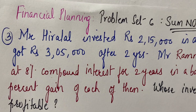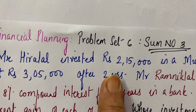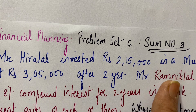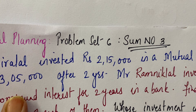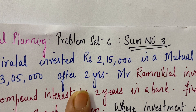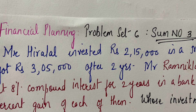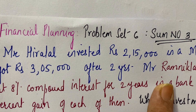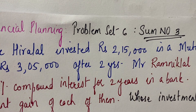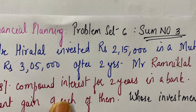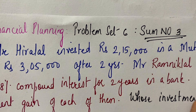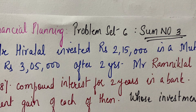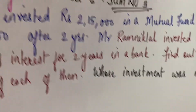Now in this sum, Mr. Hiralal invested 2,15,000 in a mutual fund and got rupees 3,05,000 after 2 years. This is the first condition. The second condition given to us is Mr. Ramnik Lal invested 1,40,000 at 8% compound interest for 2 years in a bank. The time period for both is the same. We have to find out the percent gain of each of them and whose investment was more profitable.